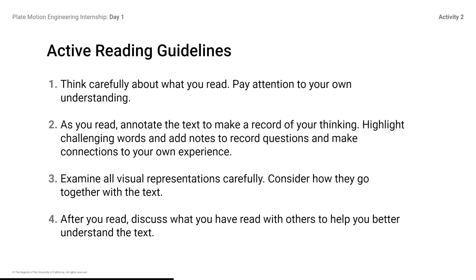1. Think carefully about what you read — pay attention to your own understanding. 2. As you read, annotate the text to make a record of your thinking. Highlight challenging words and add notes to record questions and make connections to your own experience. 3. Examine all visual representations carefully and consider how they go together with the text. 4. After you read, discuss what you have read with others to help you better understand the text.